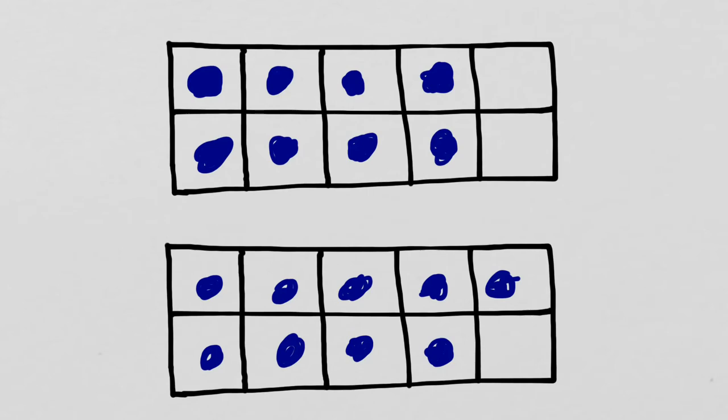So, what do I notice right away? First of all, I'm seeing very full 10-frames. So I'm guessing this number is going to be close to 20, because I know if they were completely full it would be 20. There are a couple of different ways I might think about this. What comes to mind to me is if I filled in 3 more, I'd be at 20. So I have to think: what number would I add 3 to to get to 20?